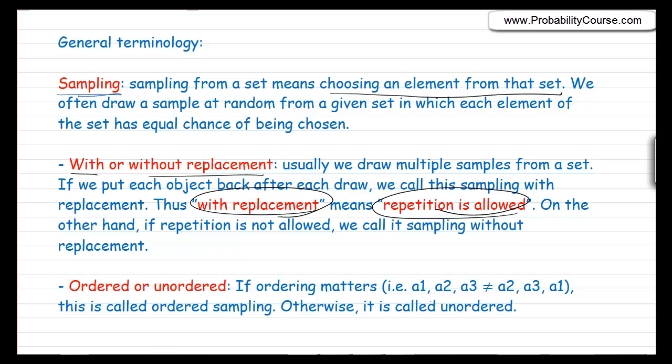Sampling could also be ordered or unordered. If it's ordered, it means that ordering matters — so a sample (a1, a2, a3) is different from (a2, a3, a1).